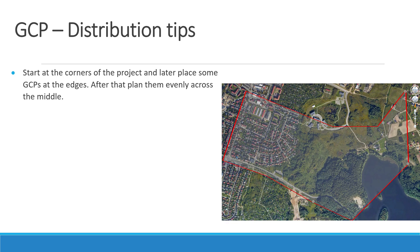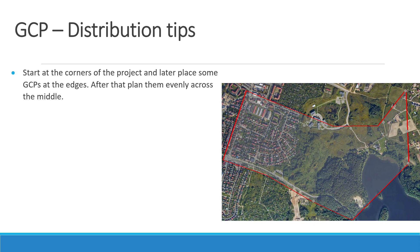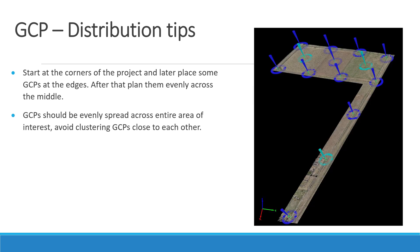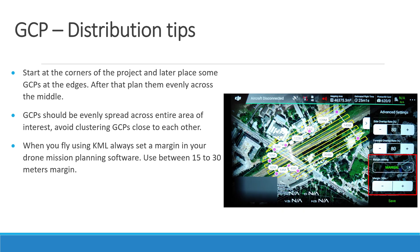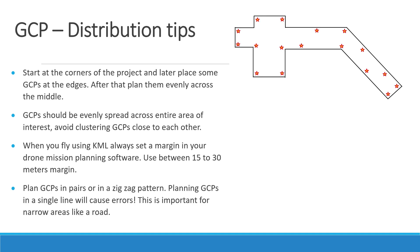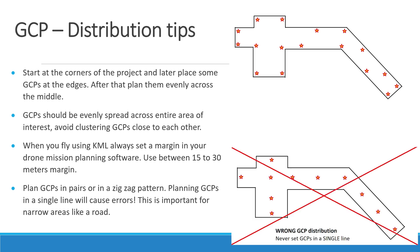Here are some important tips for GCP distribution pattern. Start at the corners of the project and later place some GCPs at the edges, then plan them evenly across the middle. GCPs should be evenly spread across the entire area of interest — avoid clustering GCPs close to each other. When flying using KML, always set a margin of between 15 and 30 meters in your drone mission planning software. Plan GCPs in pairs or in a zigzag pattern, as planning GCPs in a single line will cause errors. This is especially important for mapping narrow areas like a road.